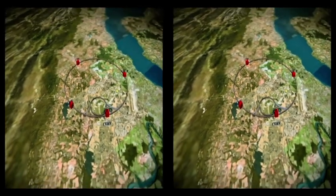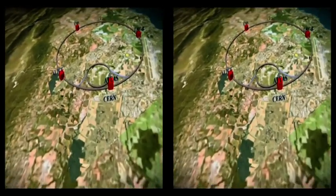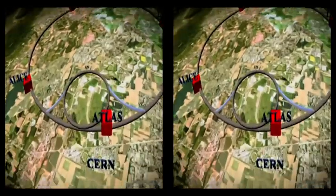100 meters below the French-Swiss countryside, stretching from the Geneva Airport to the Jura Mountains, lies a 27-kilometer long tunnel housing the Large Hadron Collider.